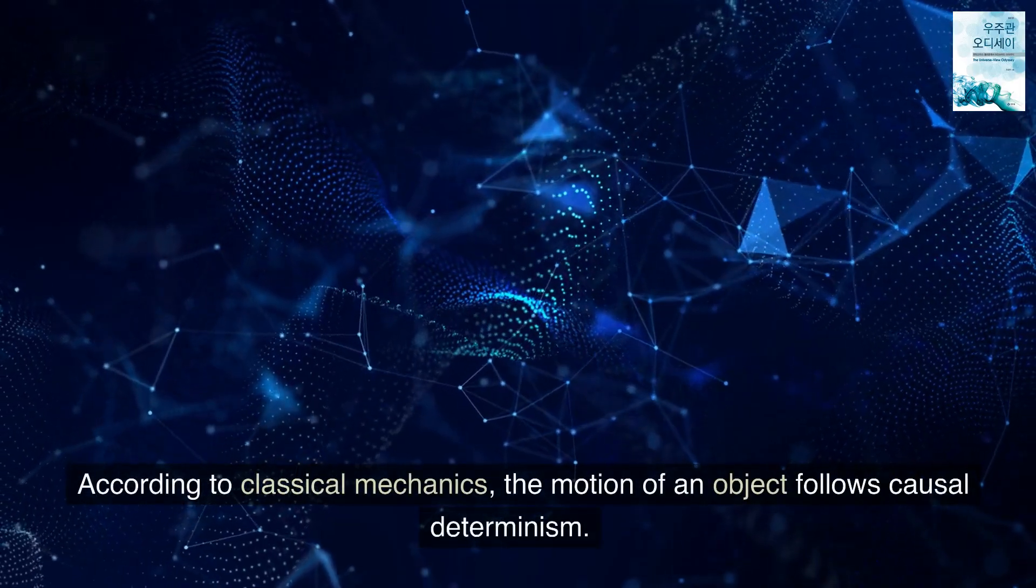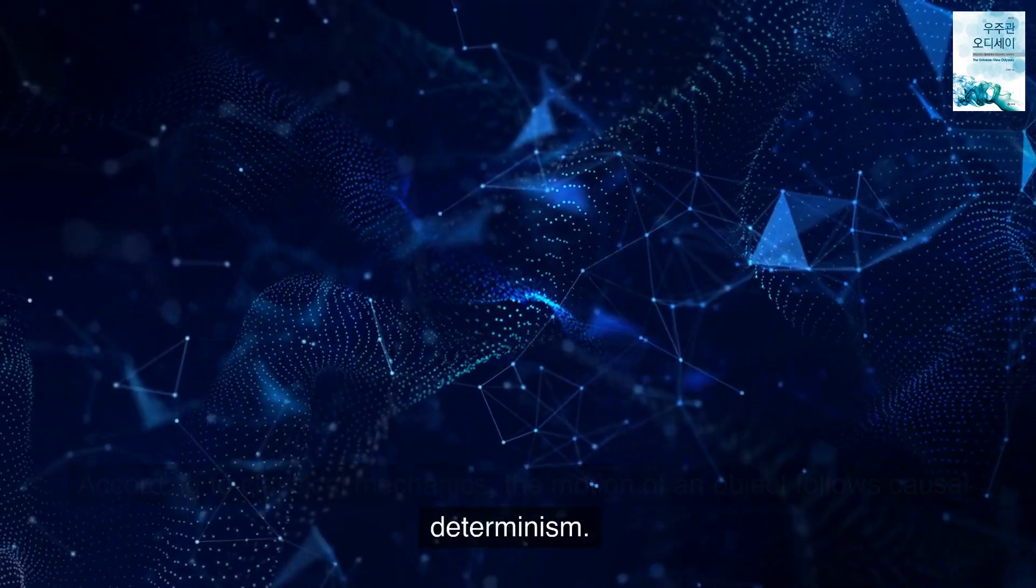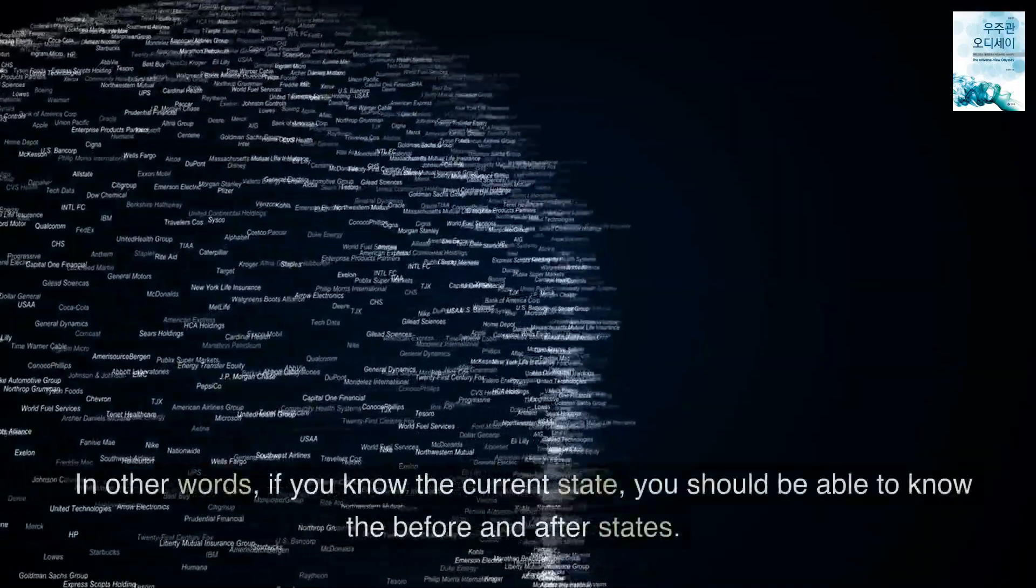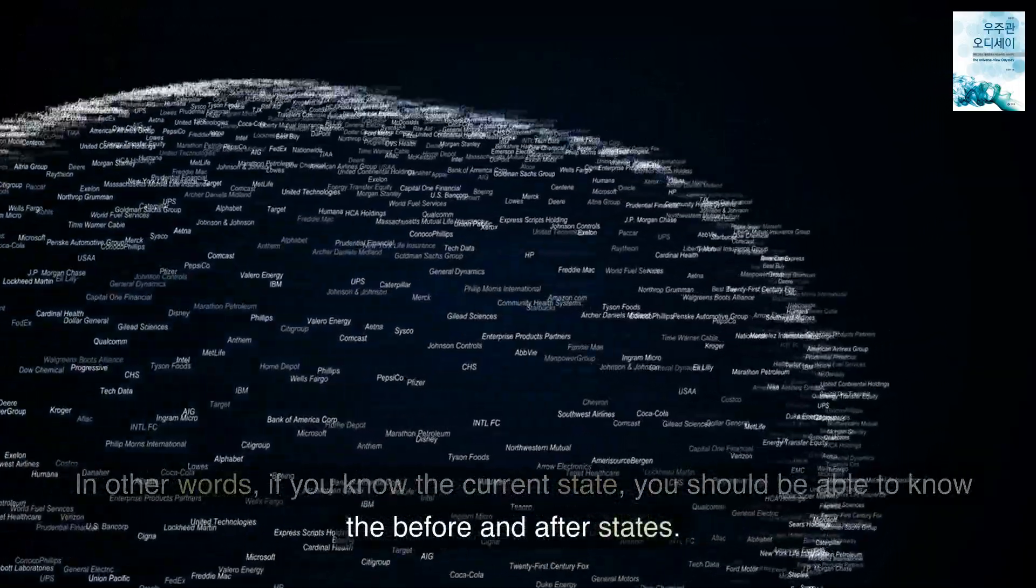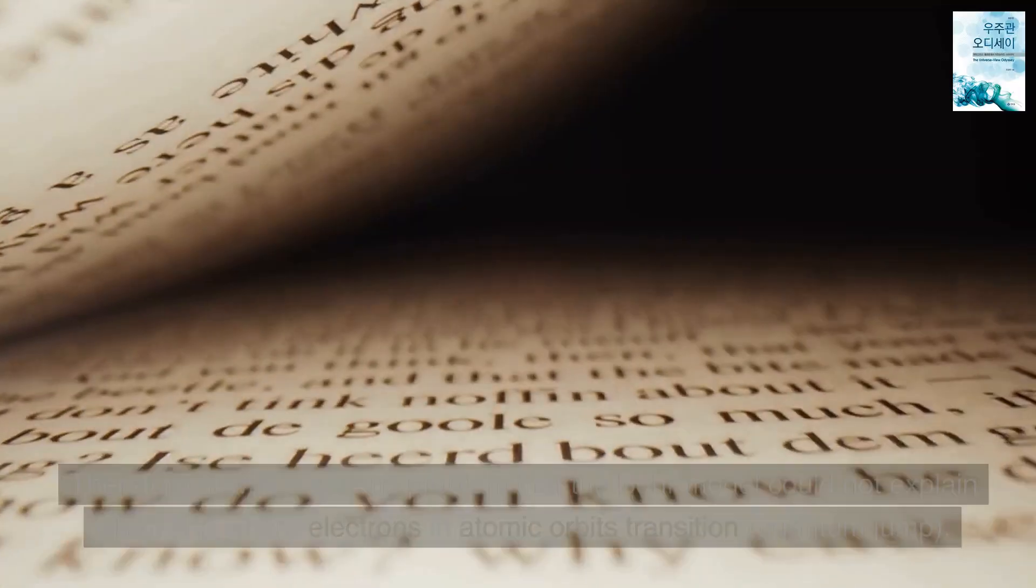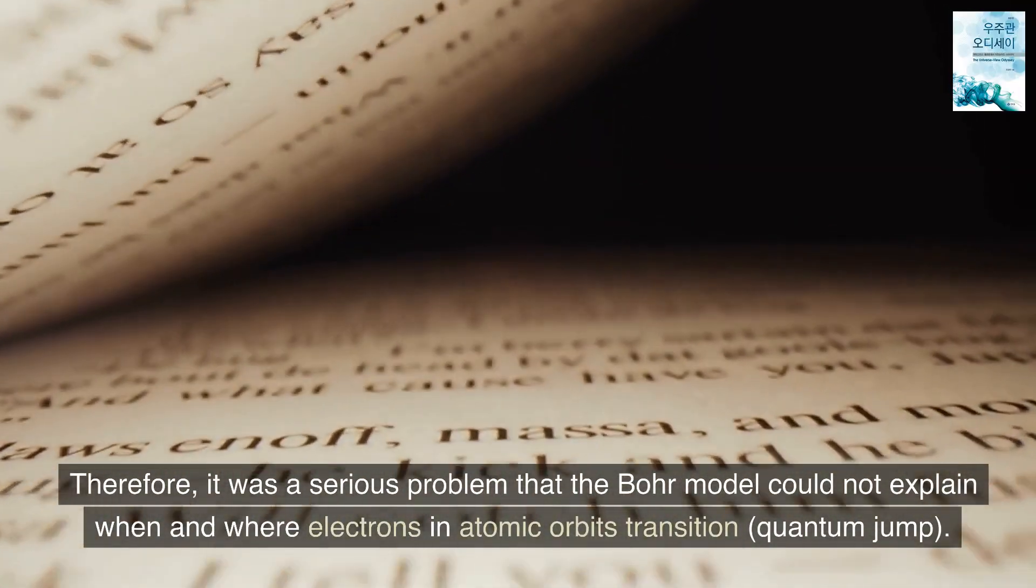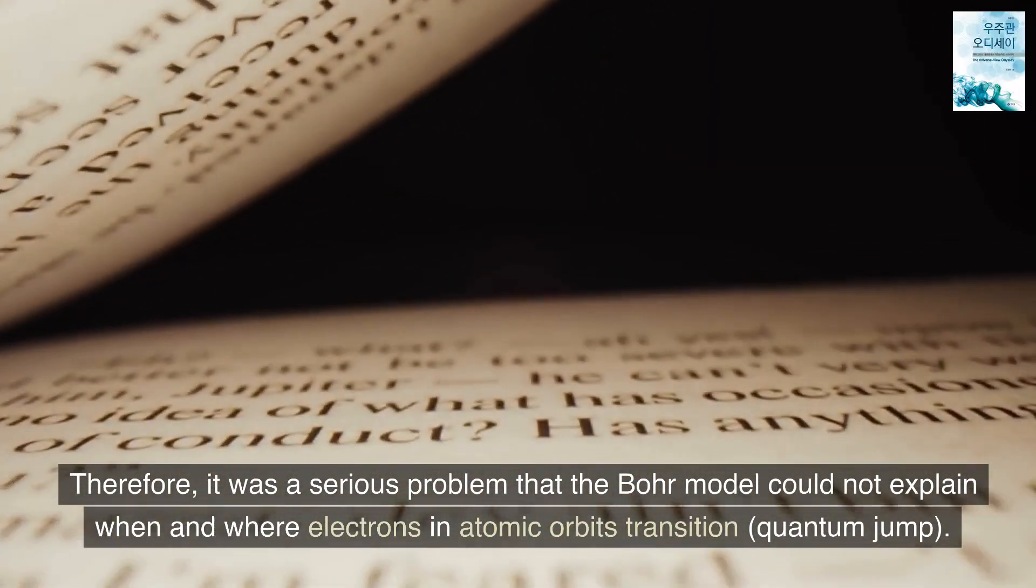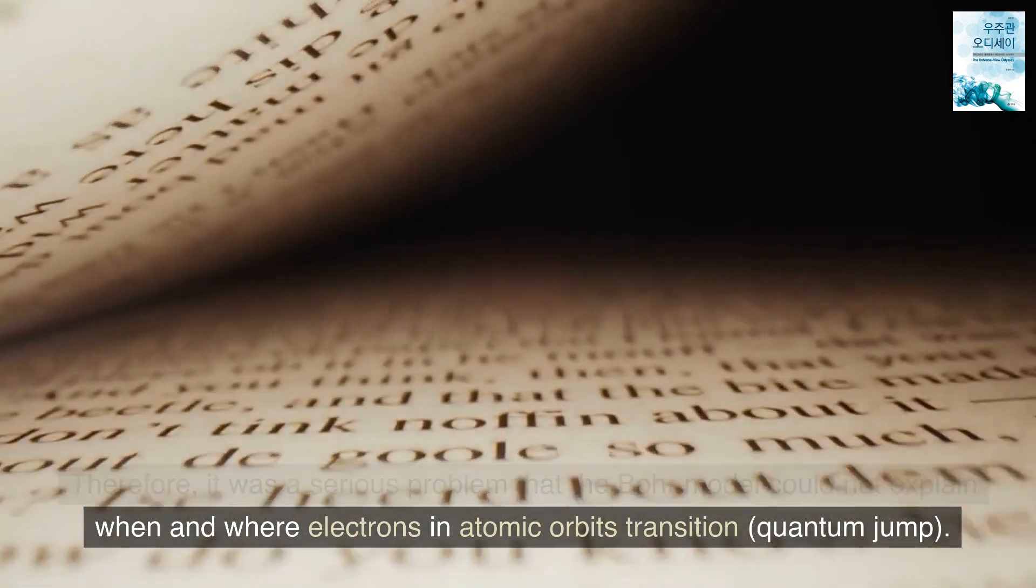According to classical mechanics, the motion of an object follows causal determinism. In other words, if you know the current state, you should be able to know the before and after states. Therefore, it was a serious problem that the Bohr model could not explain when and where electrons in atomic orbits transition, quantum jump.